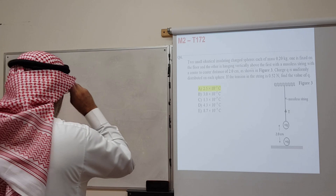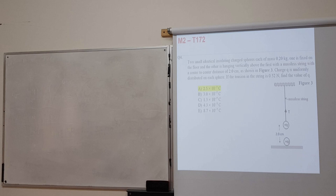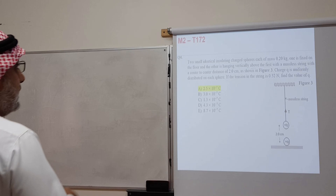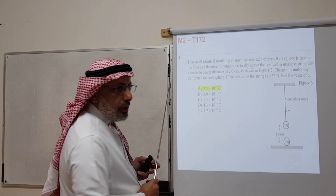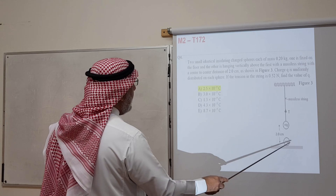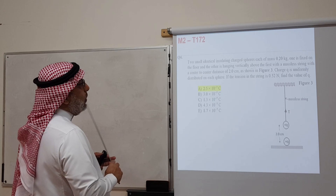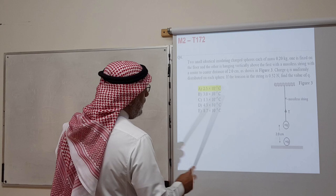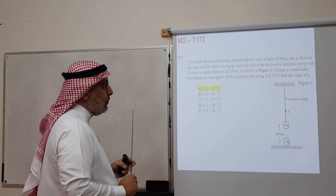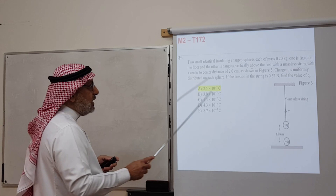Question 4 from the second major of term 172: two identical insulating charged spheres each of mass 0.2 kg. One is fixed on the floor; the other hangs vertically above it on a massless string with a center-to-center separation of 2 centimeters. Both carry the same positive charge Q, causing a repulsive force. The tension in the string is 0.52 N. Find the value of Q.